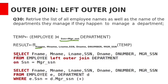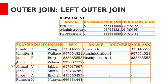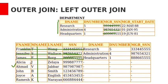The equivalent SQL query will be: SELECT FName, MName, LName, SSN, DName, DNumber, MGR_SSN FROM employee LEFT OUTER JOIN department ON SSN = Manager_SSN. Then we get this result. We have eight employees and three departments. For three employees there is a matching tuple in the department table, so those three tuples are included in the result. But the remaining five employees are not managing any department. Those five employees are also included in the result, but since there are no matching tuples in the department table, all the department table attributes are paired with null values.